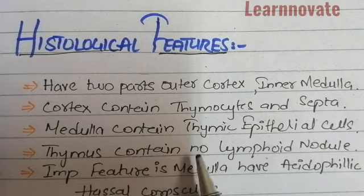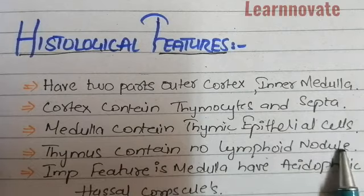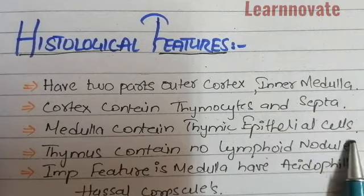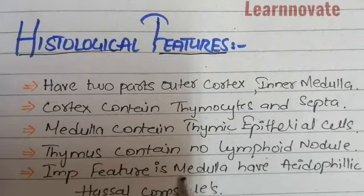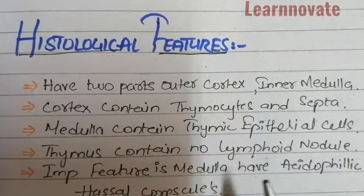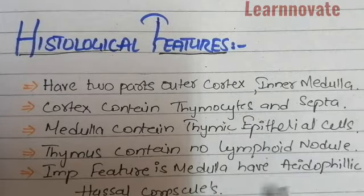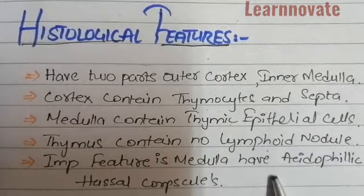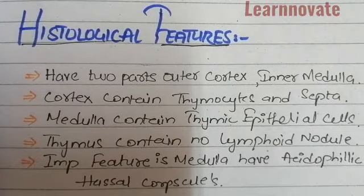The thymus contains no lymphoid nodules at all — it has only lymphoid tissue present. An important feature to remember from a histological point of view is that in the medulla there is a presence of acidophilic Hassall's corpuscles. These Hassall's corpuscles are very much visible under a light microscope.